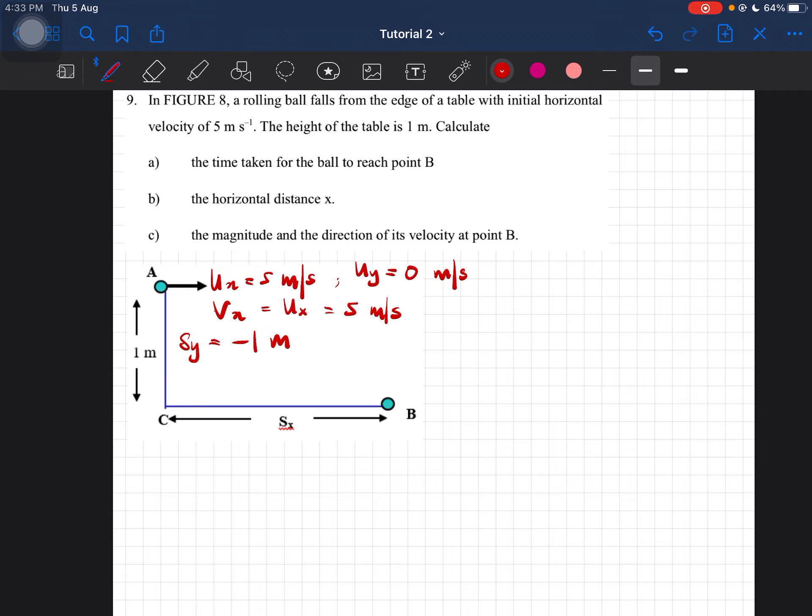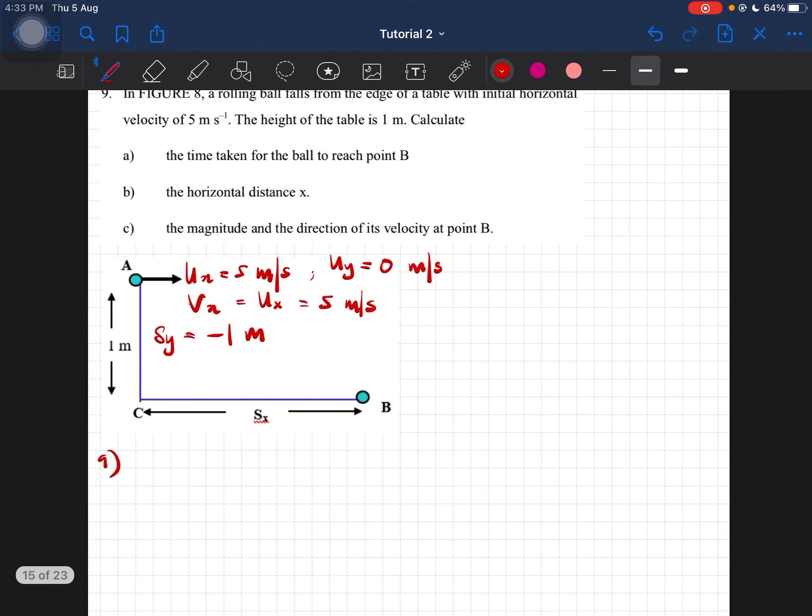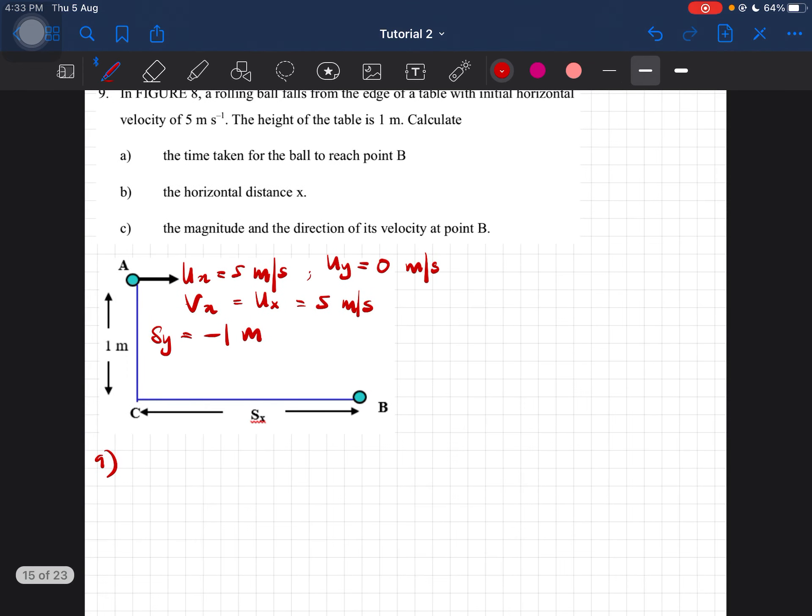Now calculate the time taken for the ball to reach point B. In this case, we are looking to find the time. Obviously the question is asking about time, so what we can do is use this formula: sy equals uyt minus half g t squared.